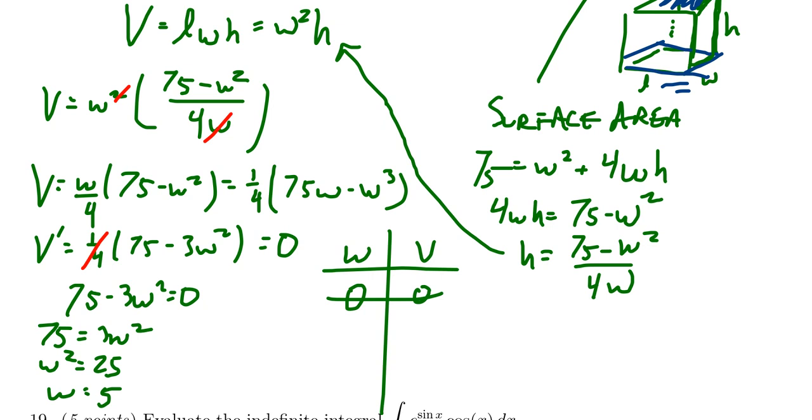If we go to the other extreme, how big can w actually turn out to be? That kind of follows from this formula right here. If you allow w to get all the way up to the square root of 75, that would set the height equal to zero.